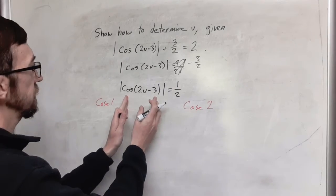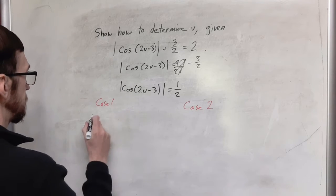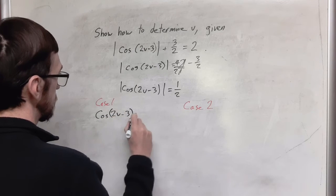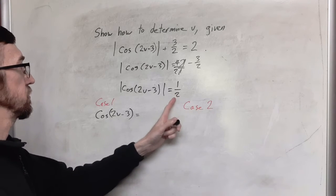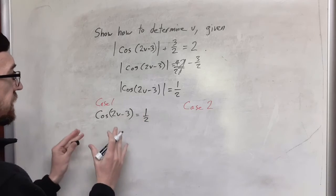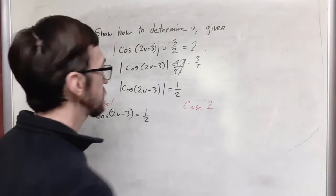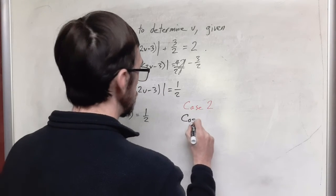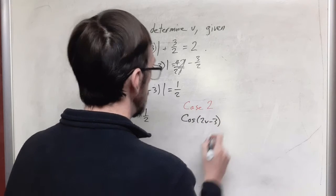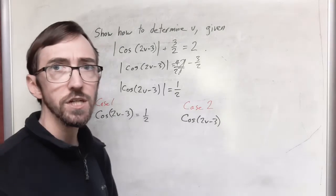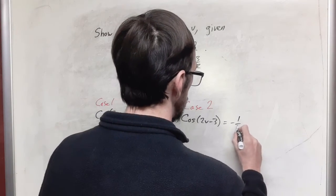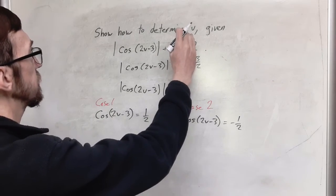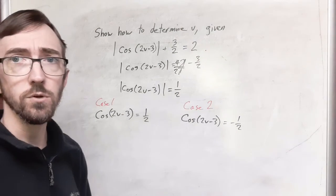For case 1 we take the left-hand side just as it is but dropping the absolute value. And we're going to set this equal to the thing on the right-hand side. So the only change in case 1 is we drop the absolute value. In case 2 we are also copying the left-hand side as is without the absolute value. But this time when we copy the right-hand side we are changing the sign on it. At this point we are solving these two cases for v and that will be the determination of v that we were instructed to find.